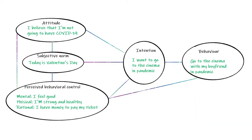And then we have perceived behavioral control, which could be mental, physical, and rational. Maybe a mental factor is that I feel good, a physical factor is that I'm strong and healthy, and a rational factor is that I have enough money to buy my ticket to go to the cinema.